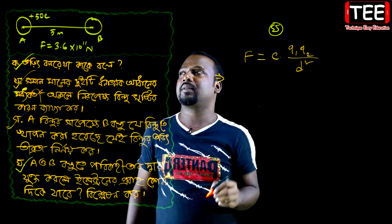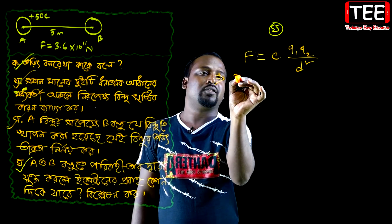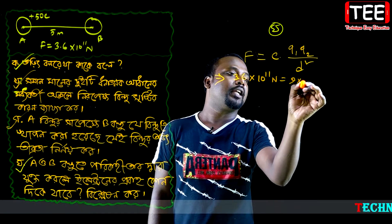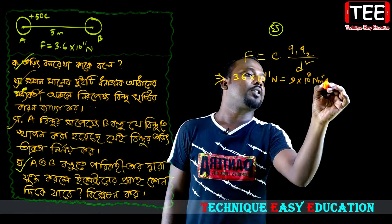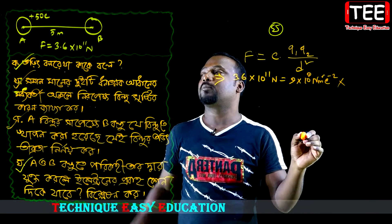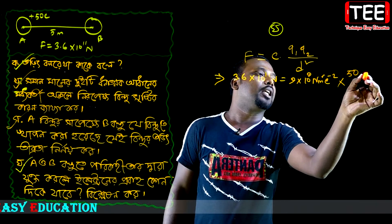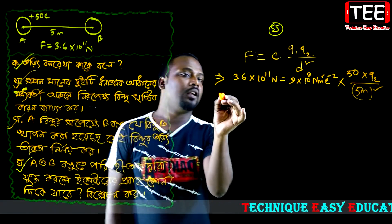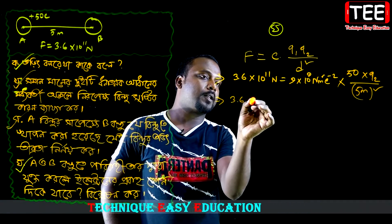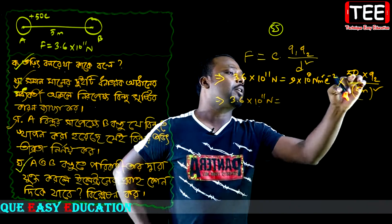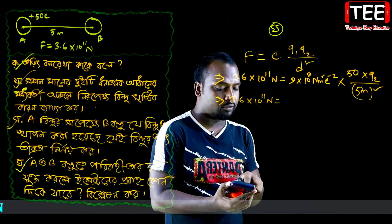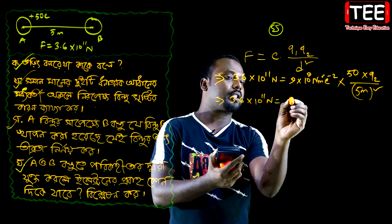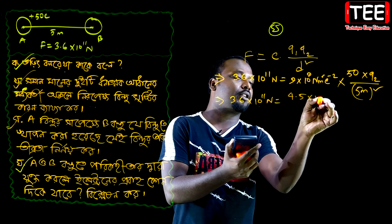So, this is 3.6 into 10 to the power of 11 newtons, 9 into 10 to the power of 9 Newton meter square per 12 coulomb square, into q1. The first A20 charge is 50 coulomb, so q2 will be done in 10 to the power of 10, and dR will be done in 5 meters. This is 3.6 into 10 to the power of 11 newtons, 9 into 10 to the power of 9 into 50. So, this gives 4.5 into 10 to the power of 11, into q2.